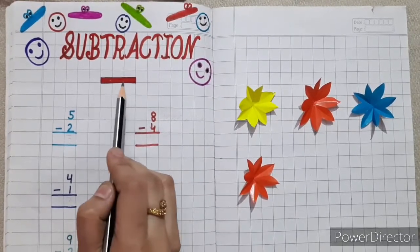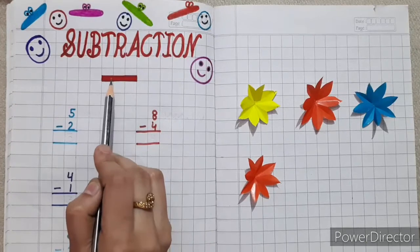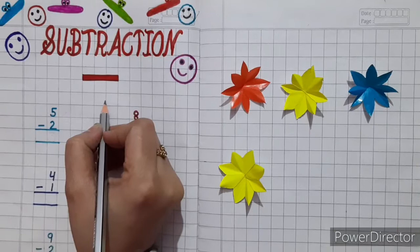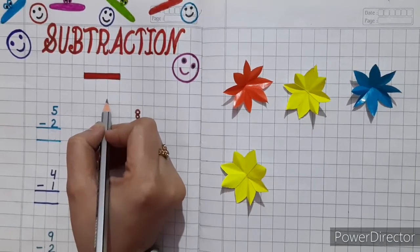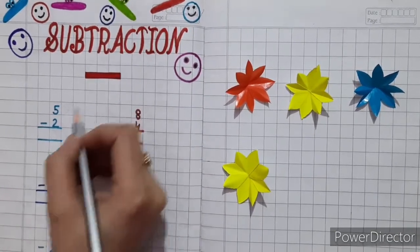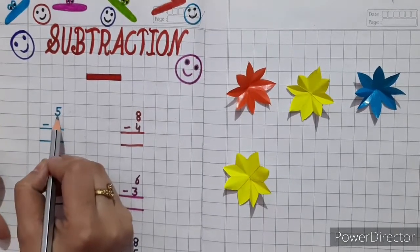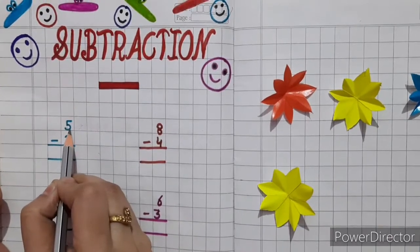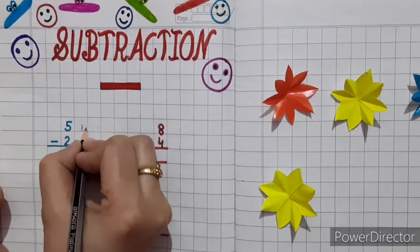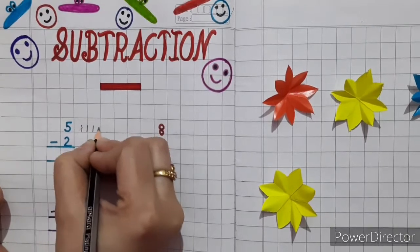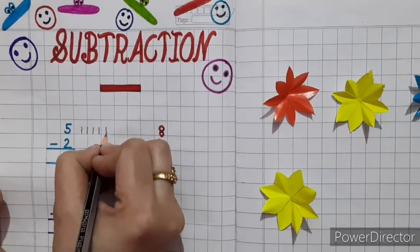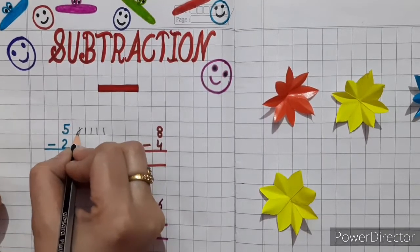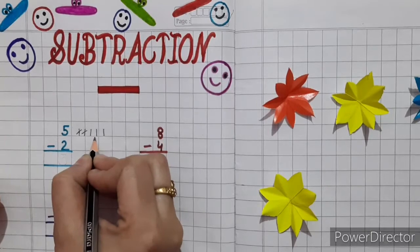This is the symbol of subtraction — we also call it the minus sign. Now let's learn various methods of subtraction. The first method is the line method. See, this is five minus two. This is five, so draw five lines here: one, two, three, four, five. This is two, so cut two lines here: one, two.